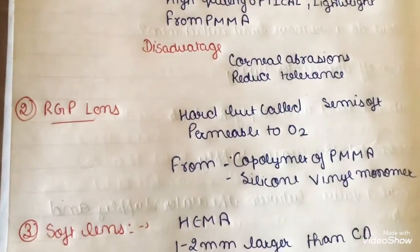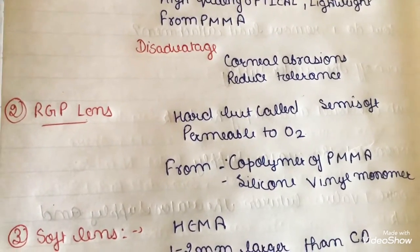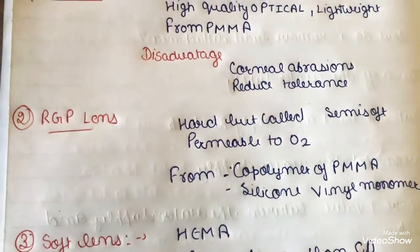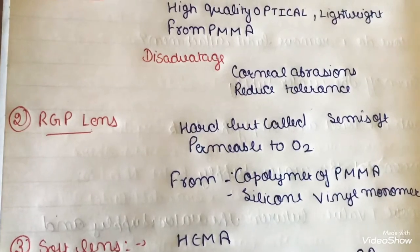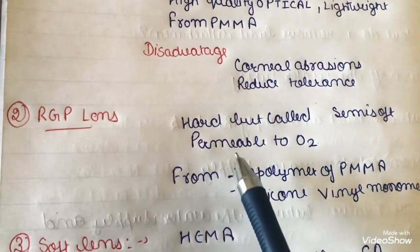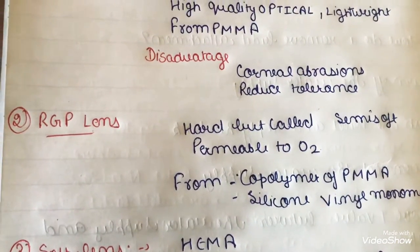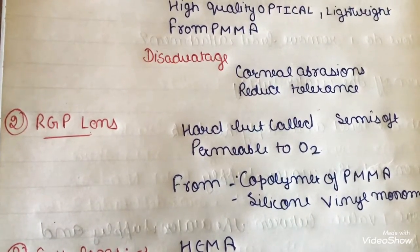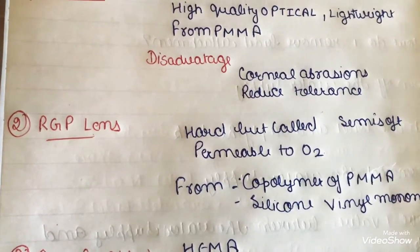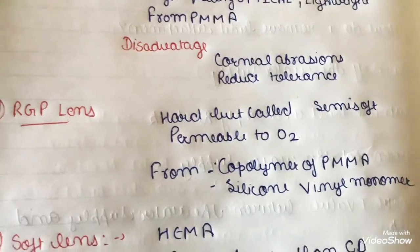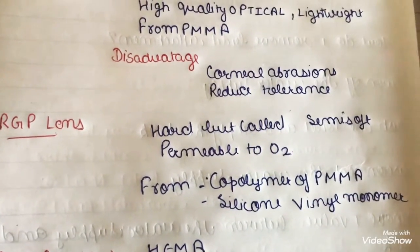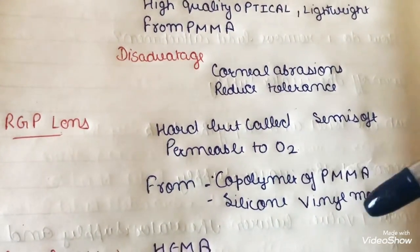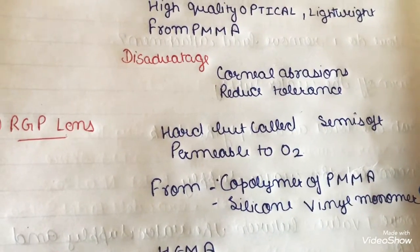RGP — rigid gas permeable — lenses are hard but not as hard as PMMA, and not as soft as soft lenses. Their key advantage is O2 permeability, meaning oxygen transmission through the lens is very easy. They are made from a polymer of polymethyl methacrylate and silicone vinyl monomer.